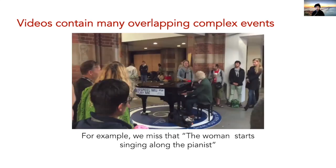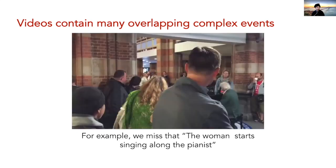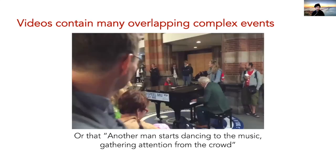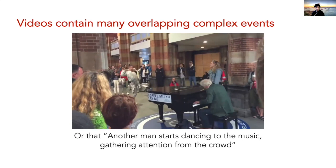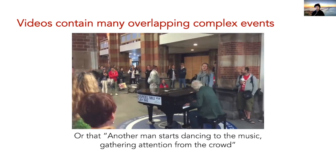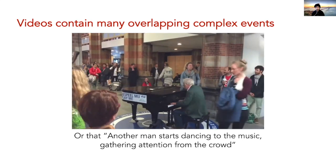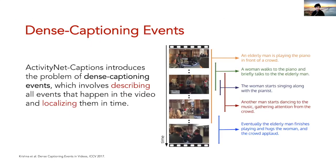In the background, we can observe that while those two events are happening, a third event where a man is dancing along with the music and singing is happening while the crowd reacts. So to better capture these denser overlapping events, ActivityNet Captions focuses on the dense captioning events task, which has two steps: describing the events in natural language and localizing each of them in time.